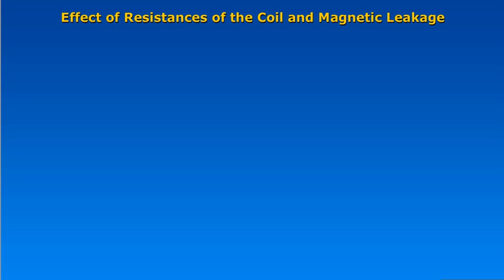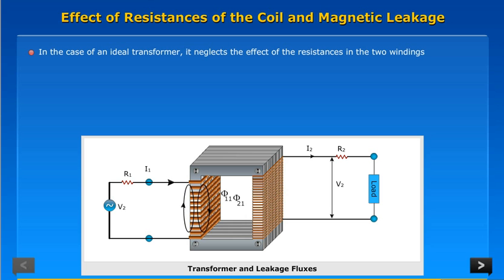Effect of resistances of the coil and magnetic leakage. In the case of an ideal transformer, it neglects the effect of the resistances in two windings.